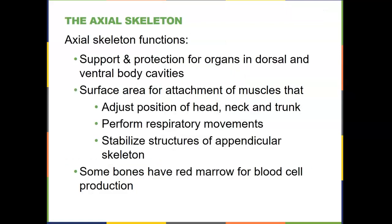What are the functions of the axial skeleton? The axial skeleton protects organs in the dorsal and ventral body cavities and helps support them — organs are attached to elements of the skeleton through connective tissues. It also provides surface area for muscle attachments, giving bones the ability to adjust the position of the head, neck, and trunk. The ligaments and tendons that attach bone to bone and muscle to bone are really strong, so bone itself has to be strong to support those attachments.